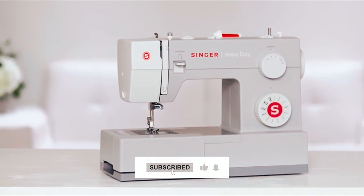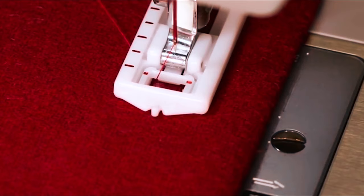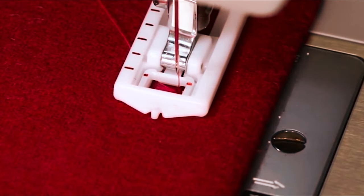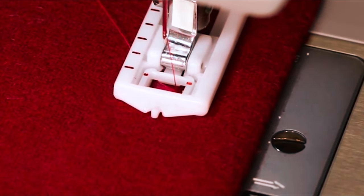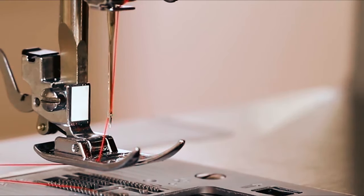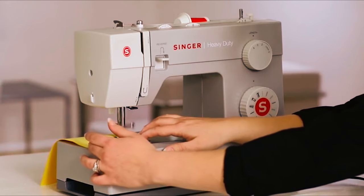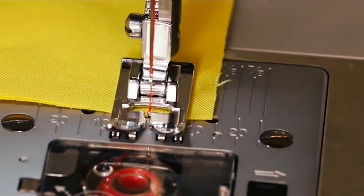With a range of convenient features such as top drop-in bobbin, built-in four-step buttonhole, and drop feed for button sewing, the Singer Heavy Duty 4411 provides professional results. It has 11 built-in stitches and an adjustable needle position for various sewing techniques. With a powerful motor, this sewing machine can achieve sewing speeds up to 1,100 stitches per minute.